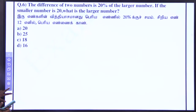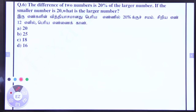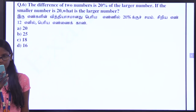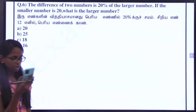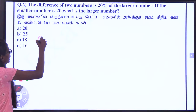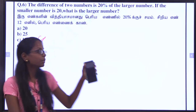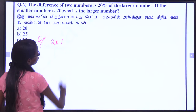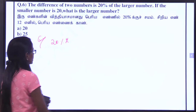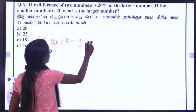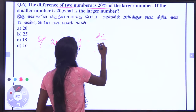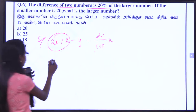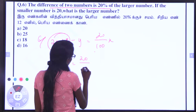The difference of two numbers is 20% of the larger number. If the smaller number is 20, what is the larger number? Let x be the larger number and y be the smaller number. The difference of two numbers equals 20 divided by 100 into x, which is the larger number.